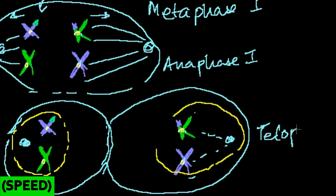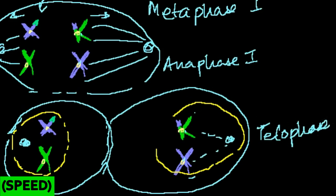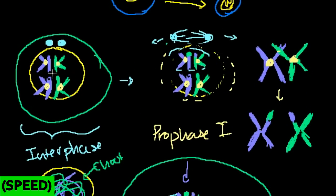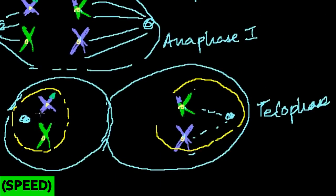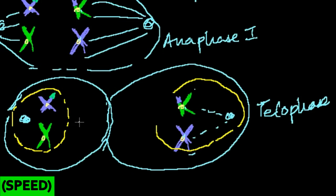So this is telophase 1. Notice we started with a diploid cell that had two pairs of homologous chromosomes — four chromosomes. Now each cell only has two chromosomes. Each cell got one from each homologous pair, but it was done randomly, and that's where a lot of the variation is introduced. Once we're at this stage, each of these cells undergoes meiosis II, which is very similar to mitosis.